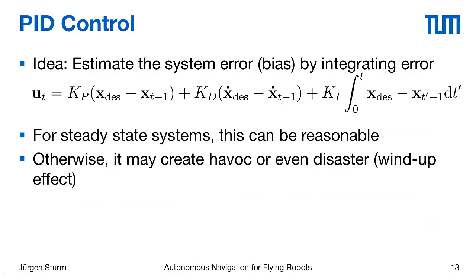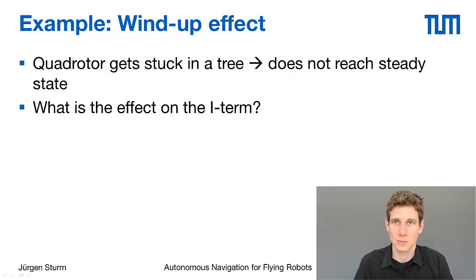This is a bit tricky to use the integral term. It's generally fine for steady state systems that can actually reach their desired location. But it might also happen that you have a system that can never reach a certain location, and this then might create a so called windup effect which can lead to a disaster or at least to a strong delay in your controller.